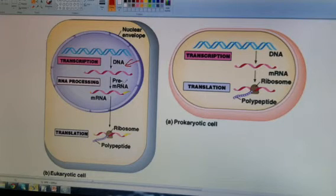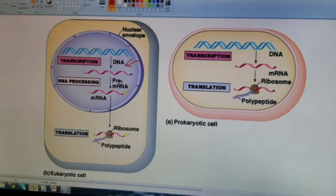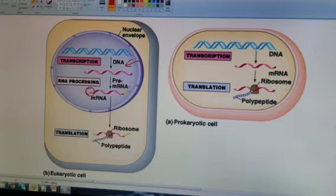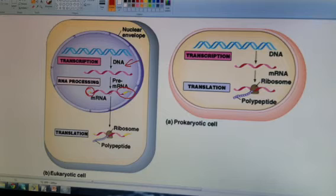Our DNA has some introns that we need to cut out, so we cut out introns and splice together the exons. That's part of RNA processing. Then we need to add a 5' cap and a poly-A tail.